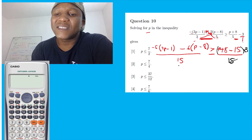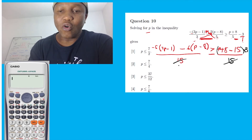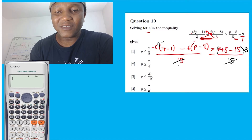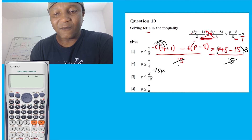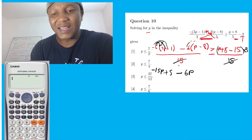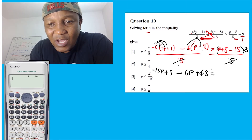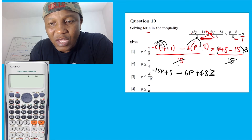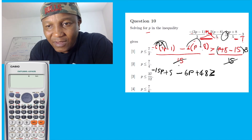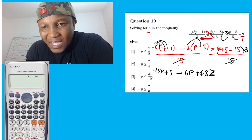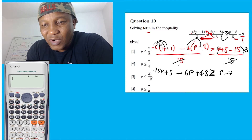Since the denominators are the same, I can cancel them. On top I'm left with negative five times three — negative five times three. I'm going to multiply: negative five times three is negative 15P. Negative five times negative one, minus negative six times three equal to 6P. And then negative six times negative eight. Then you go to the right-hand side, which is greater or equal, like how they gave us here. You go P.